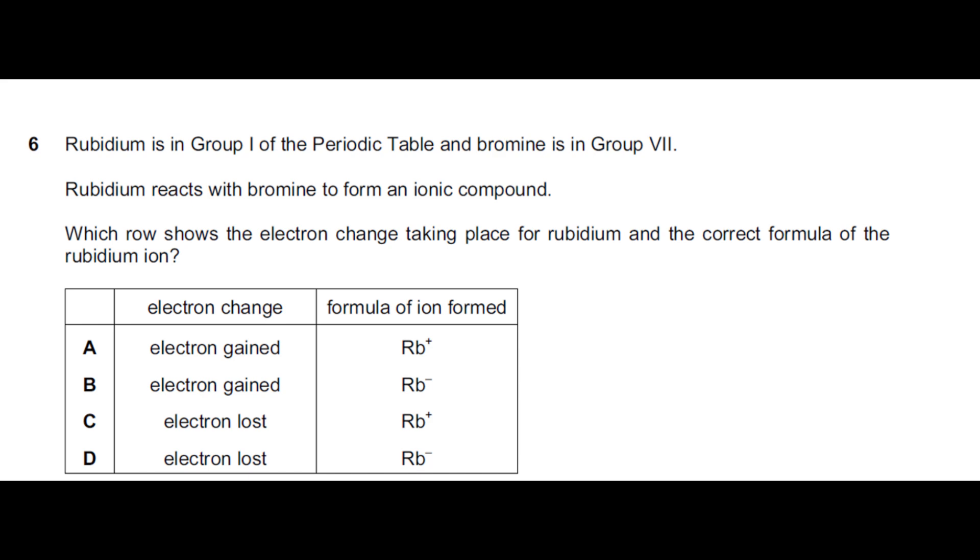Second question: rubidium is in group 1 of the periodic table and bromine is in group 7. When group 1 elements are metals and group 7 elements are non-metals, when they are forming a compound there is always a transfer of electrons. Because metals have the tendency to lose electrons and halogens have the tendency to gain electrons.